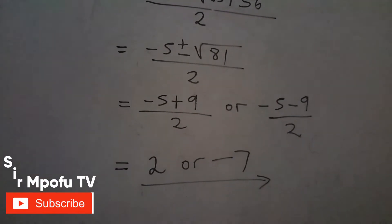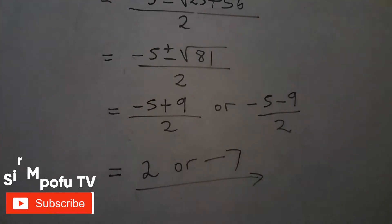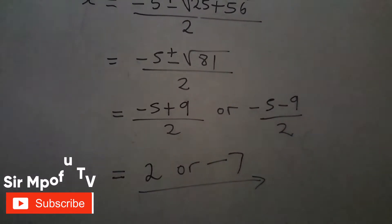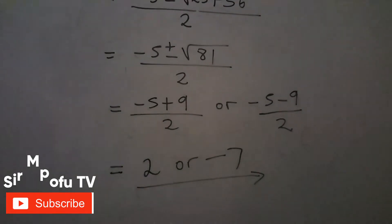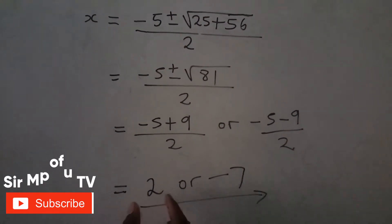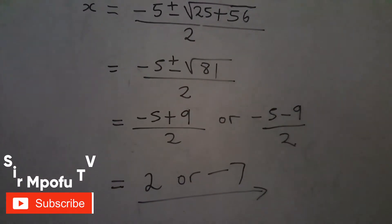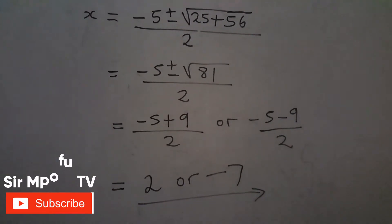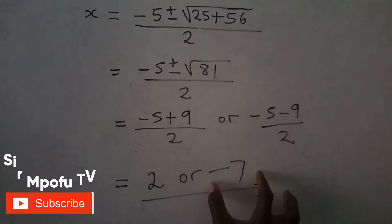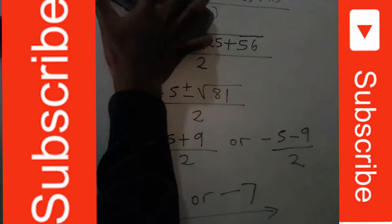This is how you use the quadratic formula to solve a quadratic equation. As I always say, every mathematical solution can be proved. I'm going to prove this by substituting each value back into the original equation — the right hand side must equal the left hand side. We'll start with x equals 2.